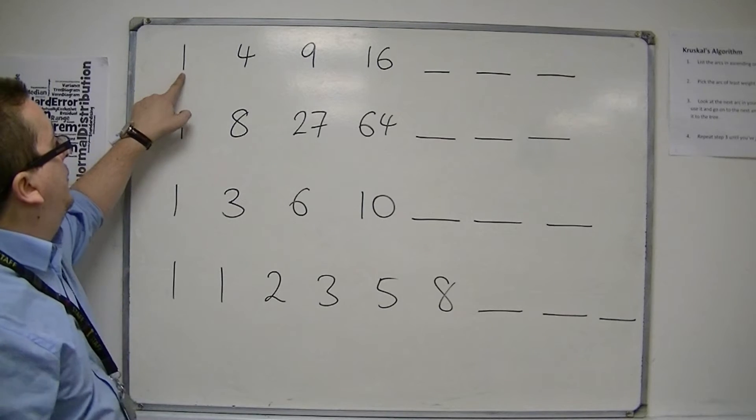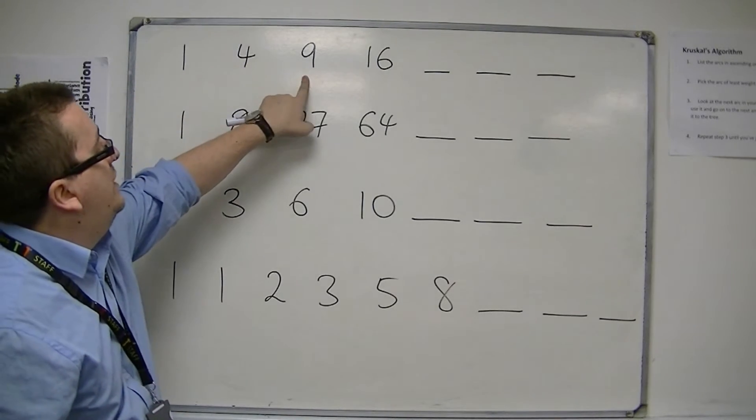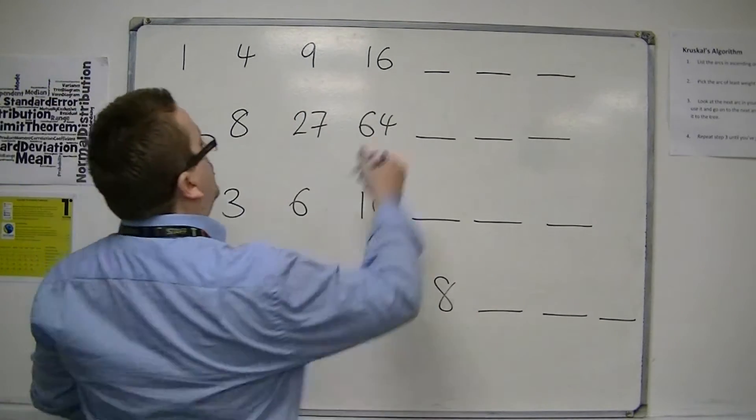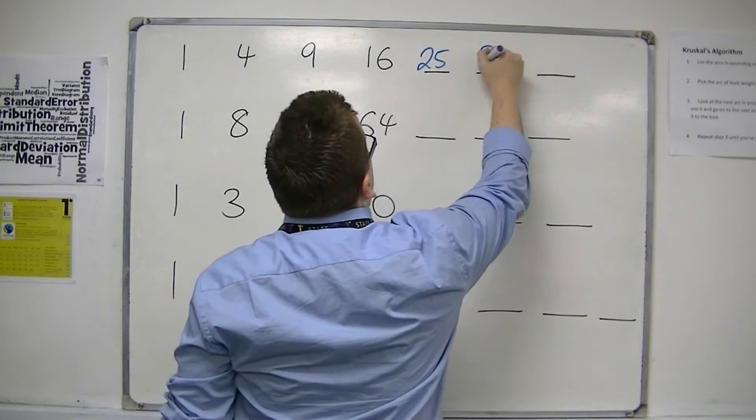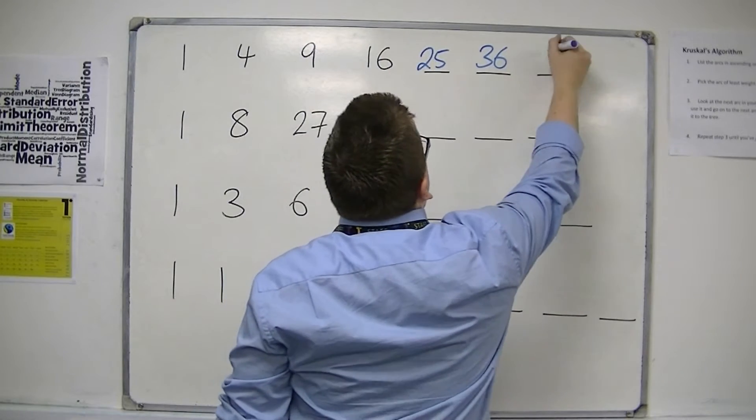So that's 1 squared, 2 squared, 3 squared, 4 squared. So the next one should be 5 squared, 25, 6 squared, 36, and 7 squared, 49.